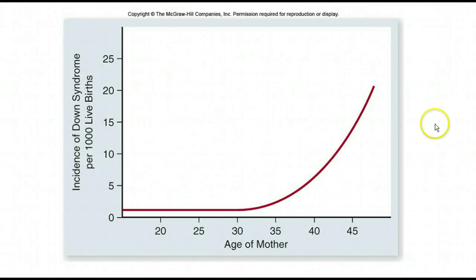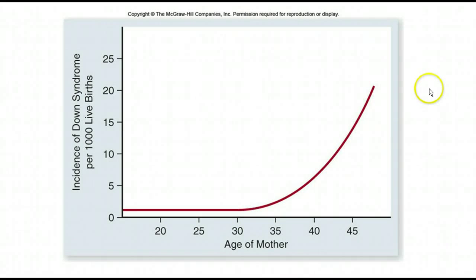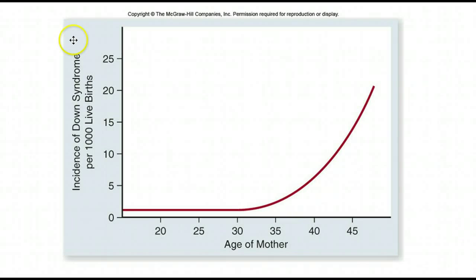Here's a chart relating the age of the mother to the incidence of Down syndrome. You can see that up to about age 30 the incidence of Down syndrome is basically flat — about two per thousand births. But then after about age 30 you can see this exponential curve going up. One interesting thing is that as women are waiting to get married and have children, it's possible we're going to see an increase in the number of Down syndrome cases simply because of societal norms about when you get married.